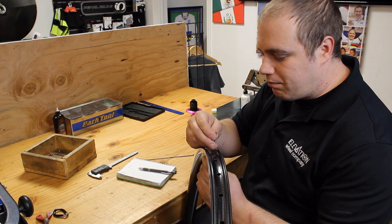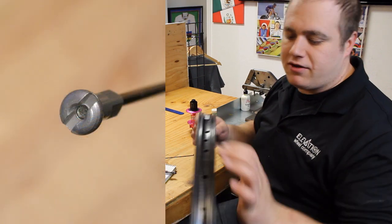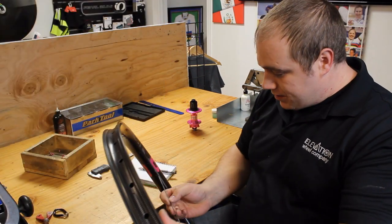So typically that is at the bottom of the screwdriver slot on a standard spoke nipple. Other spoke nipples are a little different. But we'll do that on both sides.